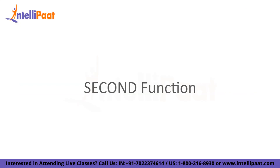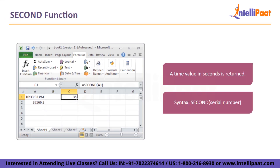Now we'll move on to the SECOND function. Using this function, a time value in seconds is returned. The second is specified as an integer with a value between 0 and 59. The syntax is: SECOND(serial_number). The serial number is the time that includes the desired number of seconds. Times may be entered as text strings enclosed in quotation marks.